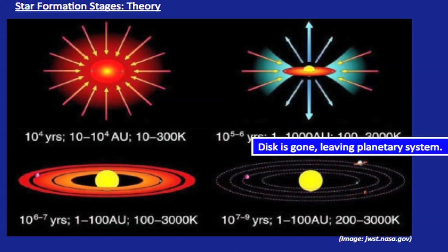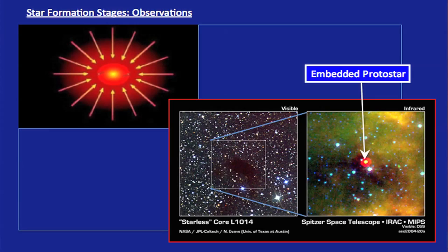Eventually the envelope material is either accreted onto the star or dispersed by the outflow, and the envelope disappears. What you're left with is a remnant disc, accretion stops, and planets begin to form. Eventually this disc completely disappears and you have a planetary system like our own. Much of this picture is actually confirmed observationally.